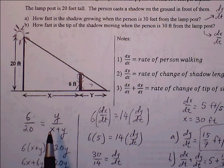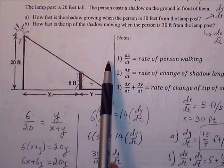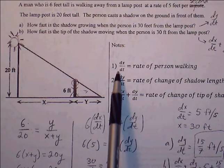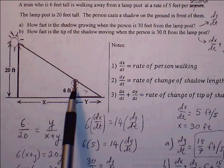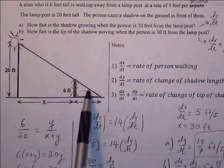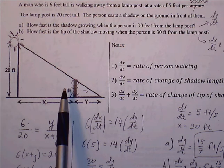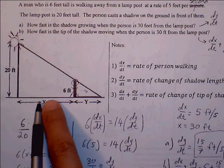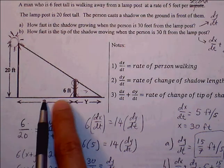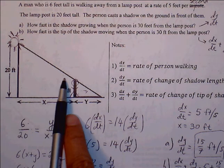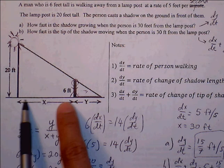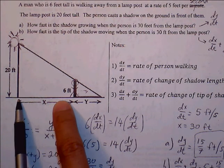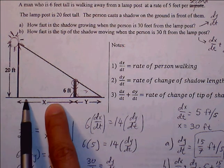The person is walking away from the lamppost at a rate of 5 feet per second, and we want to represent that as dx/dt. Walking away — dx/dt. The rate at which the person is walking away from the lamppost is the rate of change of x.